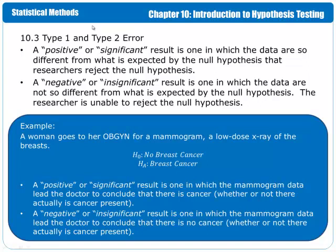If we consider the court of law situation, positive or significant results would be a guilty verdict — enough evidence had been collected to prove that the person was guilty, or enough evidence in our data was collected to prove that the null hypothesis is false. The negative or insignificant result in a court of law setting is like determining the person is not guilty. So there was not enough evidence to support the guilt of the person, and because the default is that the person is innocent until proven guilty, we have to go with a not guilty verdict.